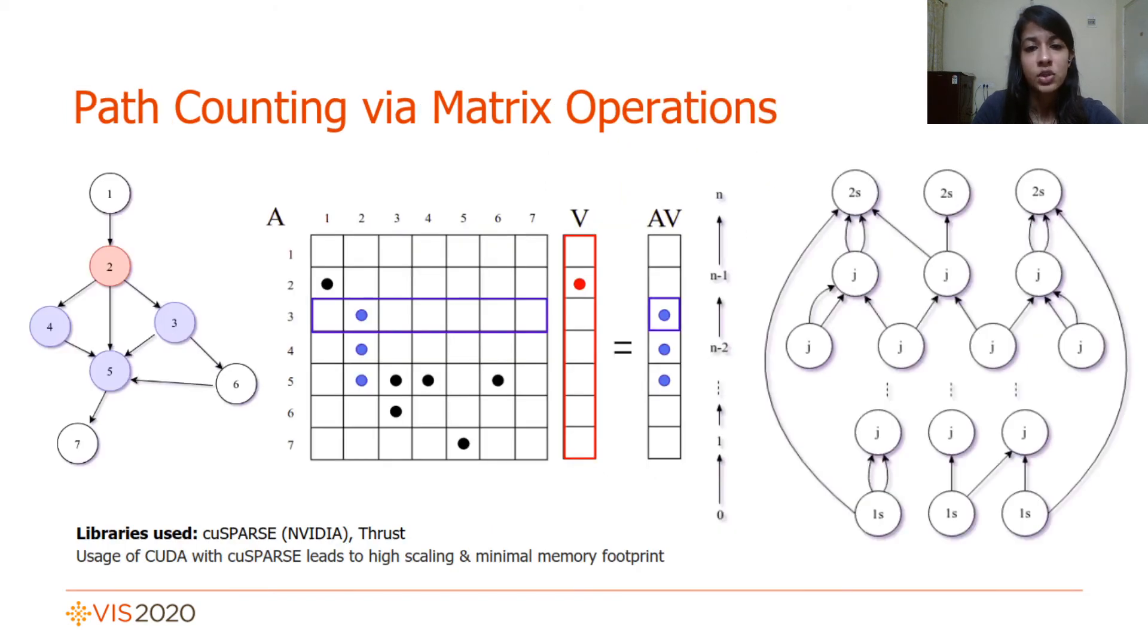The final step is to count all paths between saddles for which we leverage matrix multiplication based graph traversal. As shown, any graph can be represented as an adjacency matrix A, which when multiplied by the source vertices V gives us AV, which is the frontier discovered by the sources. We utilize cuSPARSE for all matrix multiplication operations, a choice that facilitates maximum scaling while avoiding a large memory footprint.